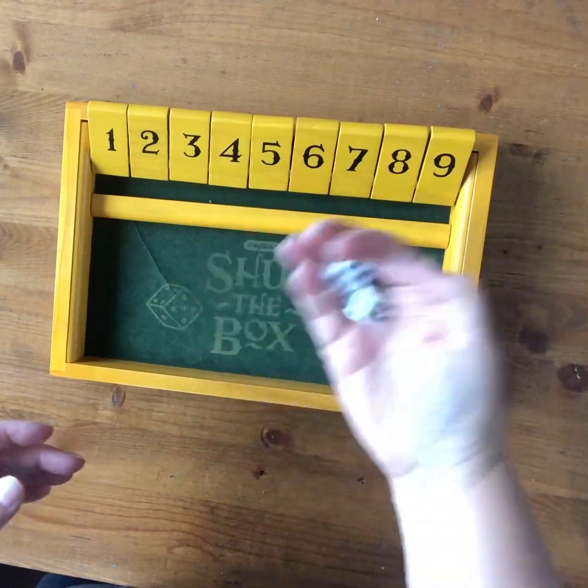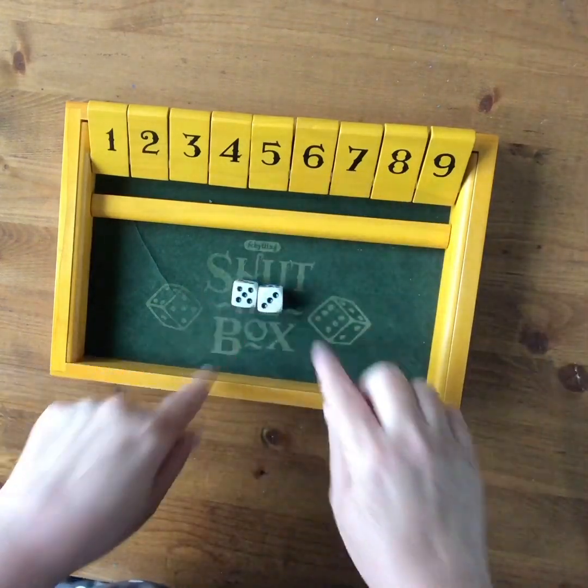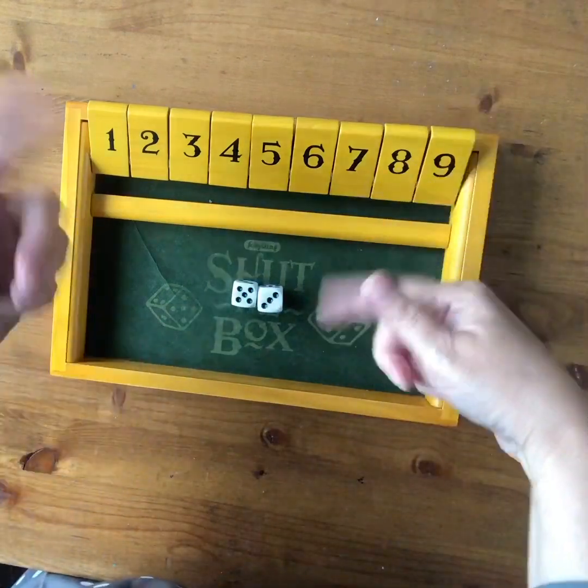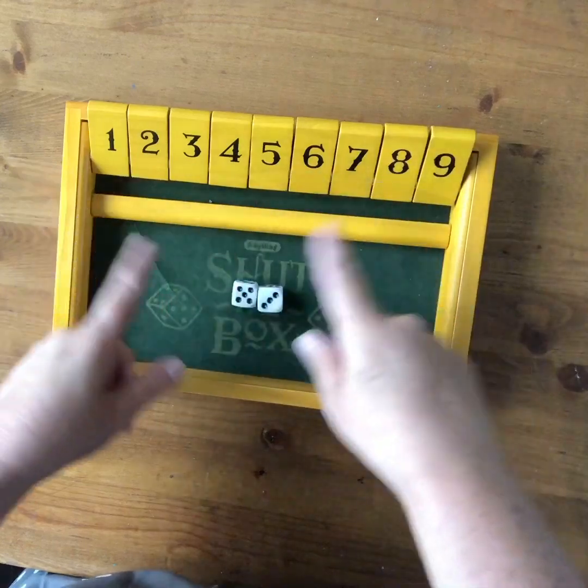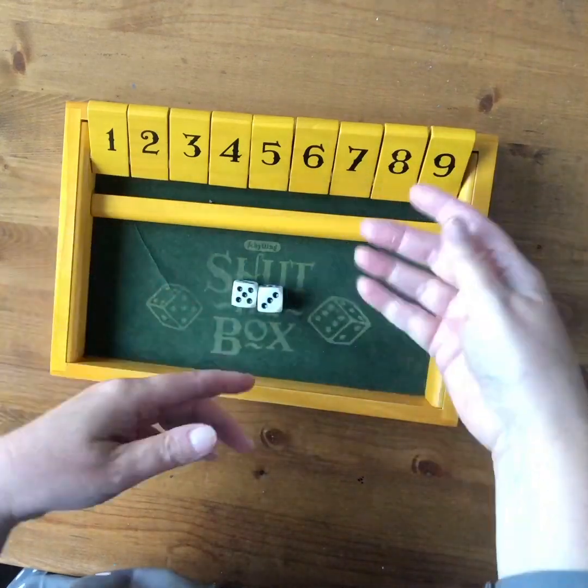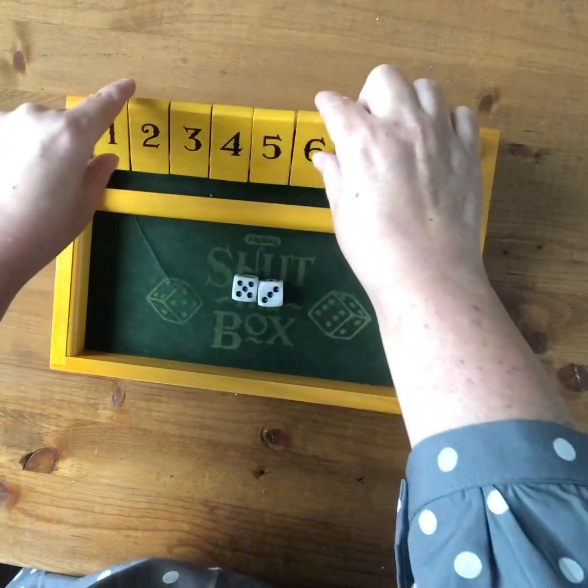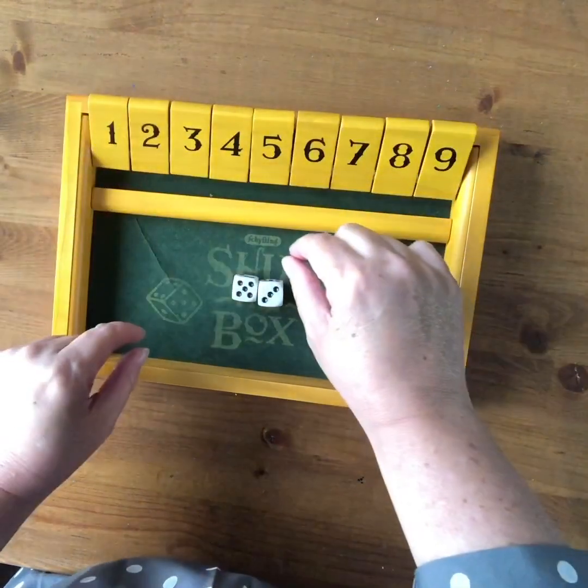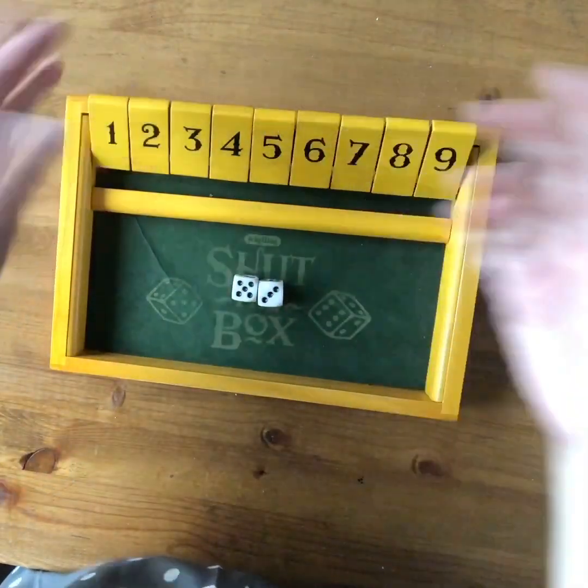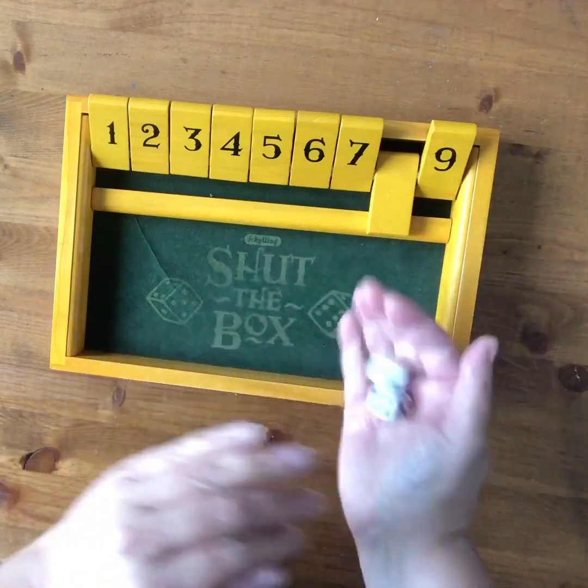So to play shut the box, you roll the dice and you add them together. So I have a sum of eight, and then you turn down the tiles. So I can either turn down the eight or any combination of tiles that equal eight. So I could do seven and one, I could do five and three, I could do six and two, I could do five and two and one. It's up to you. So for this turn, I'm going to turn down the eight, and I roll again.